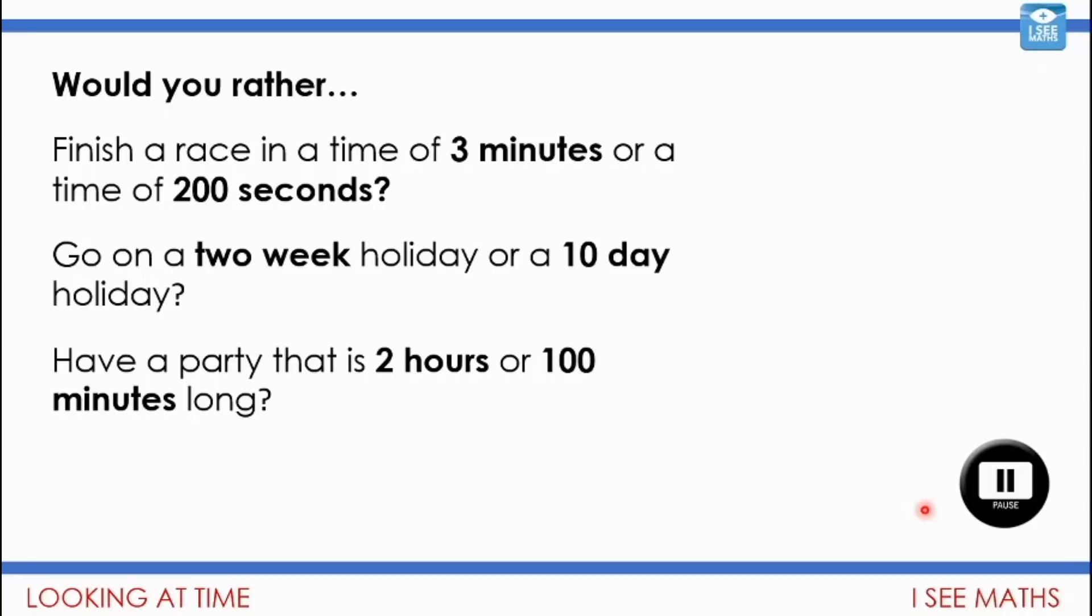Three minutes—each minute is 60 seconds, so 60 and 60 and 60, that's 180 seconds. That's actually faster than 200 seconds, so I would rather finish in three minutes. Would I rather go on a two-week holiday or a 10-day holiday? It depends if I like where I've gone on holiday, but if I'm really enjoying it, two weeks is longer—two lots of seven days, which is more than 10 days.